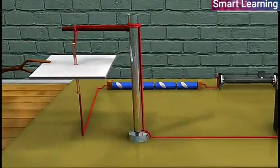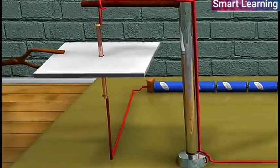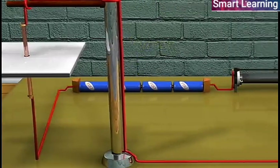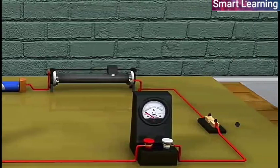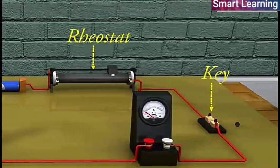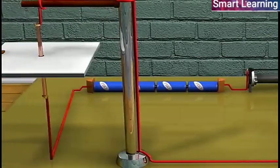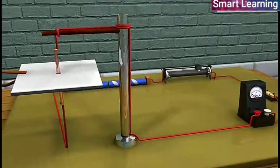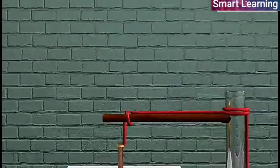Take a thick conductor, copper wire XY and pass it through the center O of the thick cardboard. Connect the ends of the conductor to the terminals of a battery through a rheostat, a key and ammeter A so that the current flows from Y to X. Sprinkle some iron filings uniformly on the cardboard.